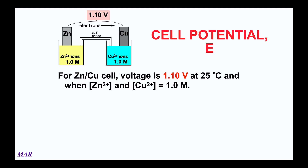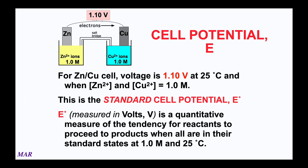EMF, the electromotive force, measures how electrons are driven based on their energies. The zinc-copper cell gives 1.10 volts at 25°C when both ion concentrations are 1.0 moles per liter — these are standard conditions. The standard cell potential is the cell potential under standard conditions: 25°C, 1 mol/L concentration, 1 atmosphere for gases. E (capital E) is the symbol for cell potential measured in volts; a little zero superscript means standard conditions, so E° = 1.10 V for this reaction.